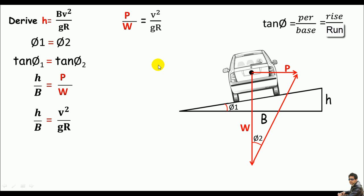I can write this formula in that form, which is h = Bv²/gR. This is the super elevation. If you're deriving the same equation for a railway